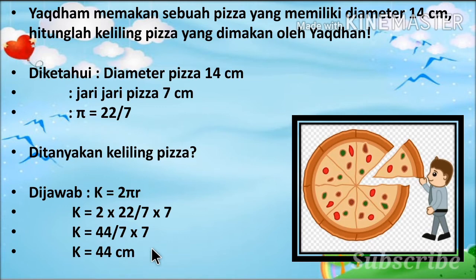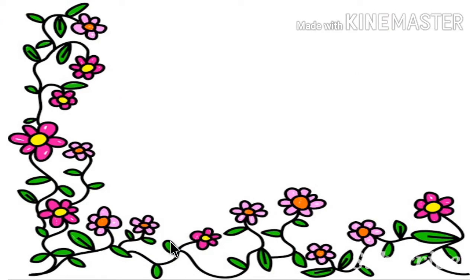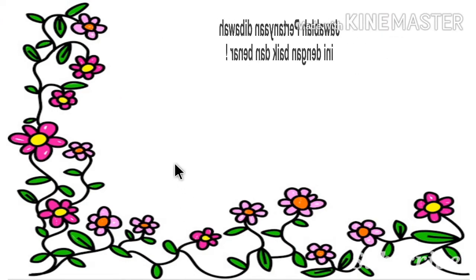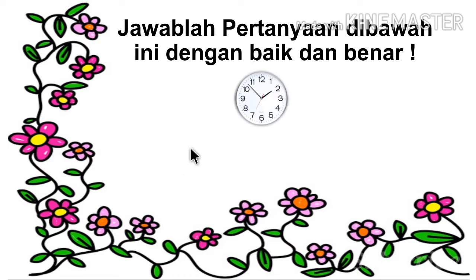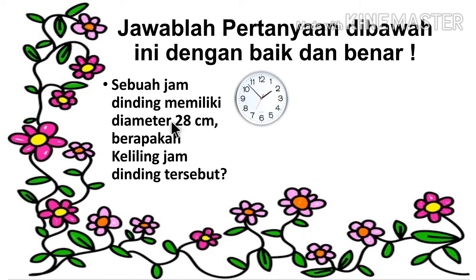Bagaimana, sudah pada paham? Sudah pada bisa? Mudah sekali bukan. Nah, kalau kalian sudah memahaminya, silahkan kalian kerjakan soal-soal keliling lingkaran berikut ini. Jawablah pertanyaan di bawah ini dengan baik dan benar. Ada sebuah gambar jam, jadi soalnya berkaitan dengan jam. Sebuah jam dinding memiliki diameter 28 cm. Berapakah keliling jam dinding tersebut?